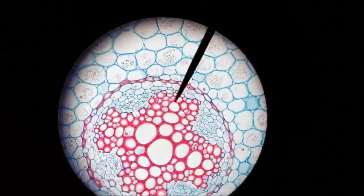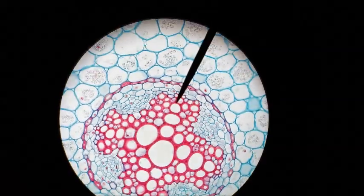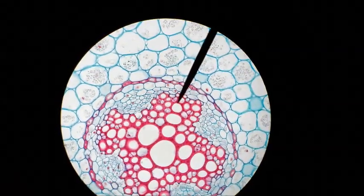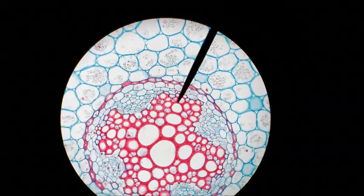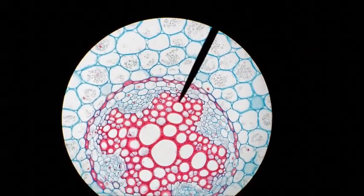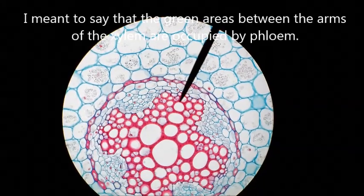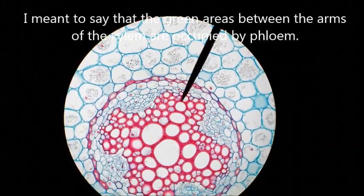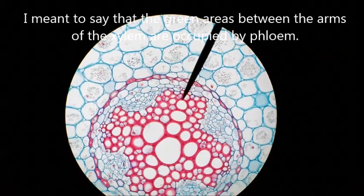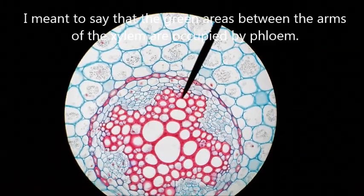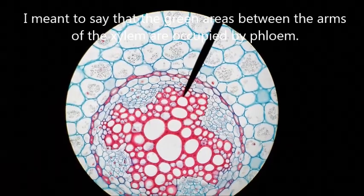In this 400x magnification of the ranunculus root which is a dicot, the pointer is on the xylem and this is sometimes called the primary xylem. The green areas between the arms are the phloem and then the circular region is the endodermis. The outer cells are called cortex.